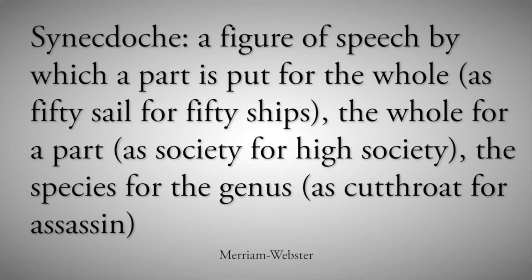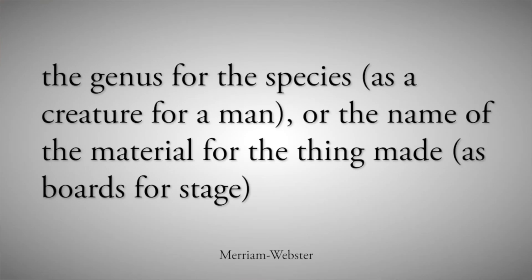Fifty sails means fifty ships. Or the whole is put for a part, as society is put for high society. Or the species is put for the genus, as cutthroat meaning assassin; the genus for the species, as creature for a man; or the name of a material for the thing made, as boards for a stage. Bullinger would clarify this a bit, but generally speaking, a synecdoche is easiest to understand when a part is mentioned but the whole is actually meant, or vice versa.